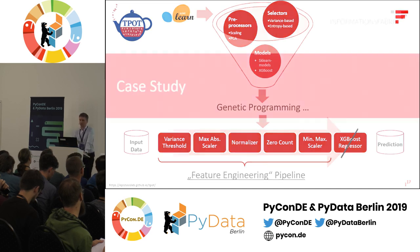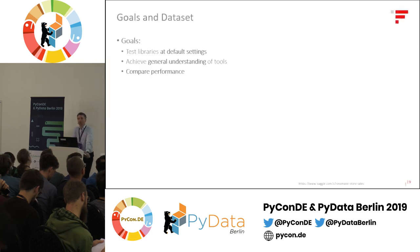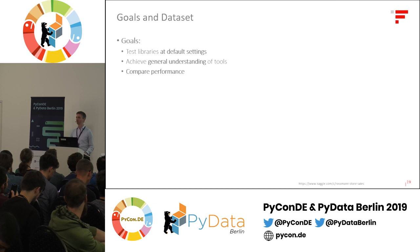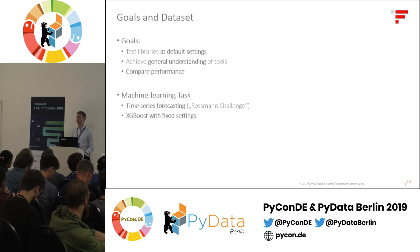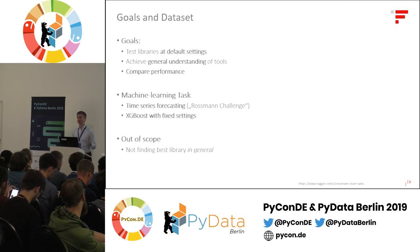Next, we applied these three libraries in a small case study, wanting to test them at their default settings — because we had automation in mind. There are many settings you can choose, but let's see what happens with defaults. We also wanted to achieve general understanding and compare performance. For this, we gave all three libraries the same machine learning task: generate features for time series forecasting on the Rossmann Challenge dataset. We used an XGBoost model with fixed settings to keep things simple. One important note: this setting cannot tell us which library is best in general — it's about understanding what they do and how they work.